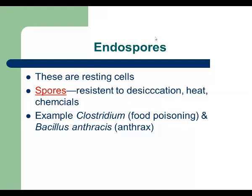Endospores are the most resistant and stable biological structures. Some bacteria — for example Clostridium species and Bacillus anthracis — can form endospores when the environment is not favorable for growth and replication. When conditions are unfavorable, bacteria form endospores and go into a resting, inactive stage. When the environment becomes favorable again, bacteria remove the endospores and move into the vegetative stage, which is the actively growing stage.